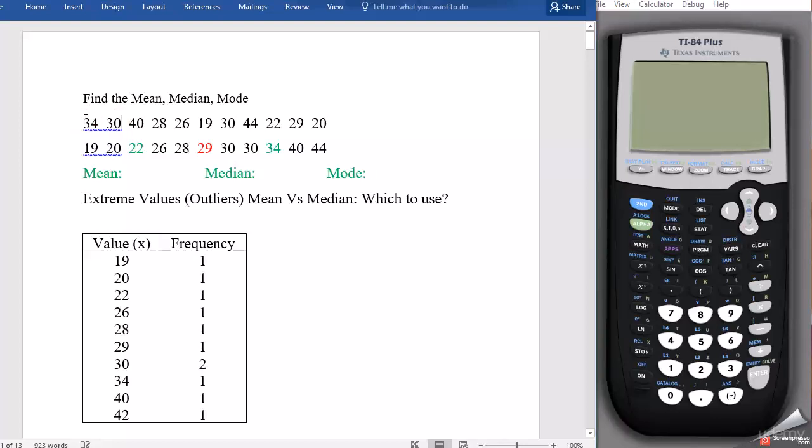Looking here you can see that we have a list of numbers: 34, 30, 40, 28, 26, 19, 30, 44, 22, 29, 20. I have arranged the same numbers down here from the smallest to the biggest, and the reason I did that was to show you very quickly how we identify the mode. You can see 30 appears two times; the rest of the numbers appeared only once, so the mode in this case is going to be 30. The mode is the number that appears most.